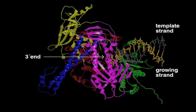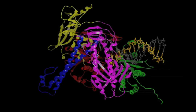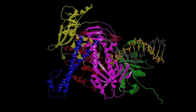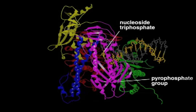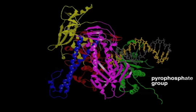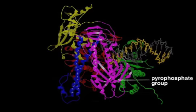The different domains of DNA polymerase are colored differently. Before a nucleotide can be incorporated into DNA at the 3' end of the growing strand, the blue finger domain of the polymerase moves inward to correctly position the nucleoside triphosphate. A pyrophosphate group is released when each nucleotide is added.